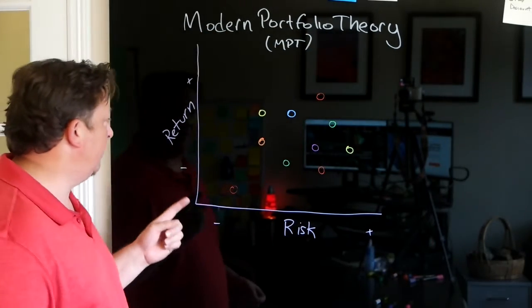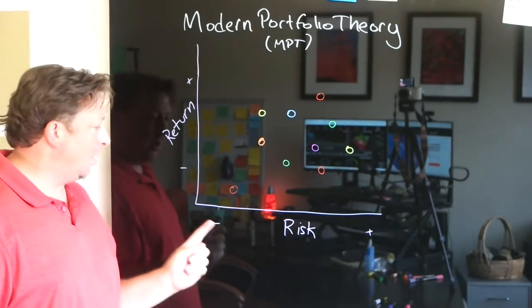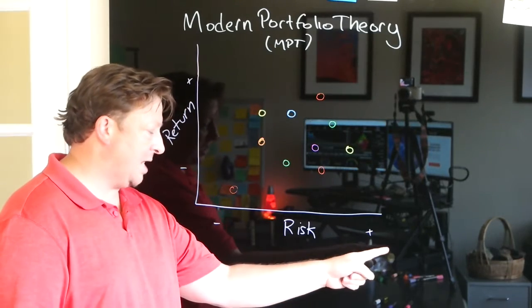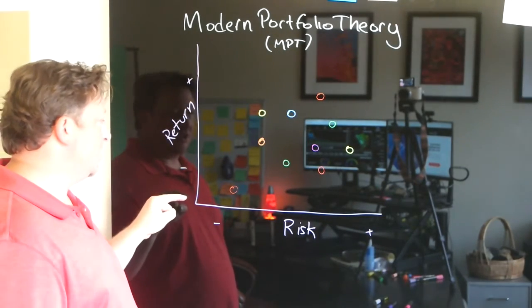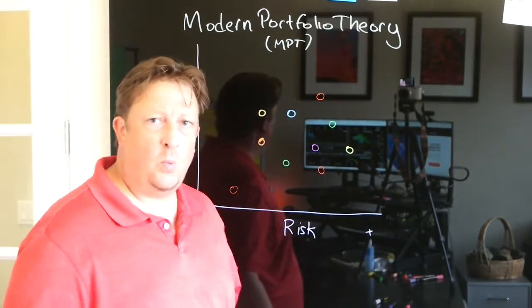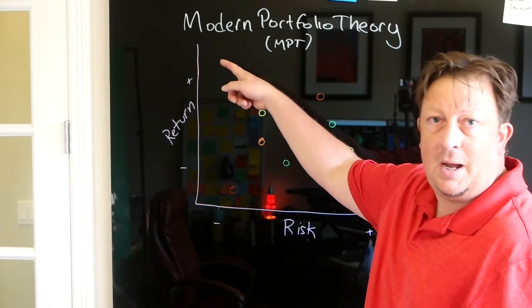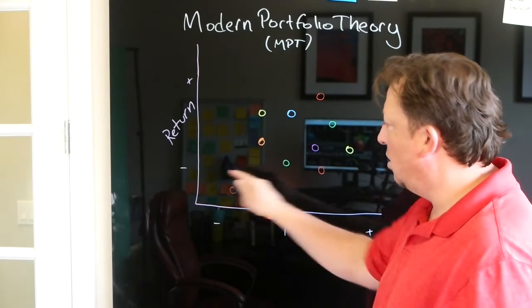Here in this framework, we've got our x-axis is returns. Our y-axis is risk. Over here, risk is higher. Risk is lower. And on the return side, towards the origin is lower returns. And up high is higher returns. So where do you want to be on the spectrum? You want to be up high over here. You want to have the highest return and the lowest risk.